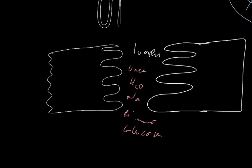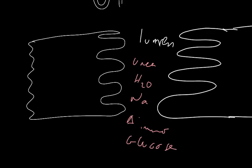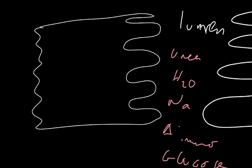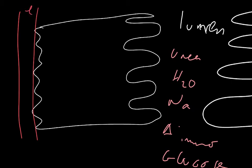So in the lumen of the proximal convoluted tubule, we have everything that's been squeezed out from the glomerulus into the renal capsule. The question is how do you recover the things you want, and how do you not take back the things you want to get rid of? This proximal convoluted tubule cell has microvilli to increase the surface area for more facilitated diffusion proteins. At the back there's a folded basal membrane to increase the surface area. This connects to a portion of the efferent arteriole, which is wrapped throughout the proximal convoluted tubule to collect the recovered products.